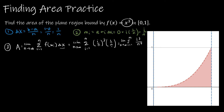Continuing: I'm going to take 1 over n to the 4th out front, and then replace i cubed with the summation formula. Notice I get to stop writing the summation at that point, but I keep writing the limit. The summation formula for i cubed is n squared times (n plus 1) quantity squared over 4. Continuing on, I have n squared in the numerator times n squared plus 2n plus 1, and in the denominator n to the 4th times 4.